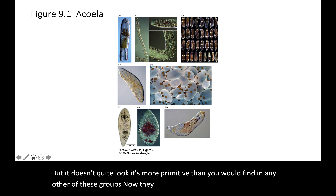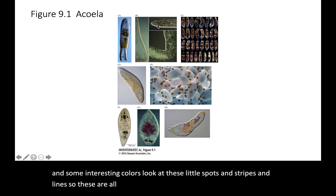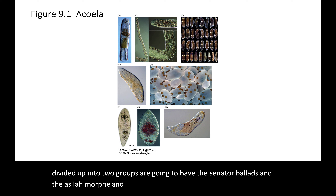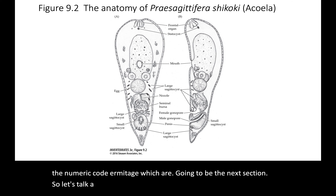The Acoela have some very interesting shapes and colors — look at these with little spots, stripes, and lines. These are all Acoela. Remember, Xenacoelomorpha is divided into two groups: the Xenoturbellida and the Acoelomorpha. Acoelomorpha includes the Acoela and the Nemertodermatida, which we'll cover in the next section.